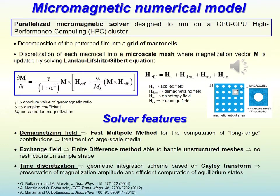Specifically, the demagnetizing field is calculated by using a fast multipole method for the evaluation of the long-range contributions. The exchange field is computed with a finite difference method which is able to handle unstructured meshes. Details of the micromagnetic solver can be found in the references below.